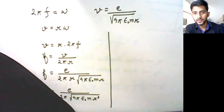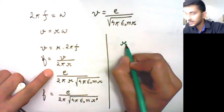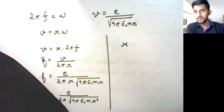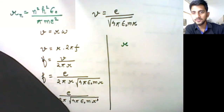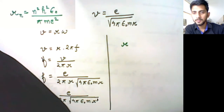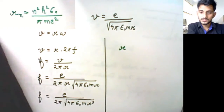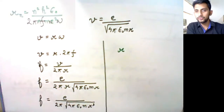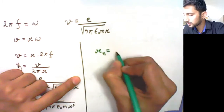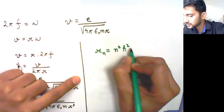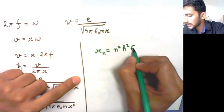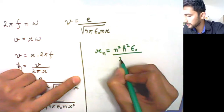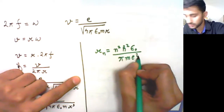Now we need to use the equation of r. This is where our video paused previously. The radius is given by rₙ equals n²h²ε₀ upon πme². So this equation for rₙ is what we are going to substitute into the frequency formula.